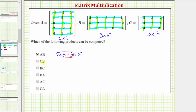Next we have matrix C times matrix B. Matrix C is a three by three matrix and matrix B is a three by five matrix. The number of columns in the first matrix is equal to the number of rows in the second matrix, which means we can compute the product. The result is going to be a three by five matrix.